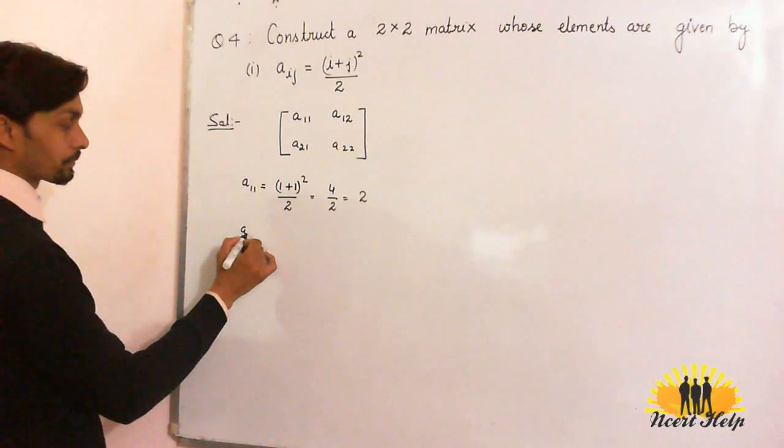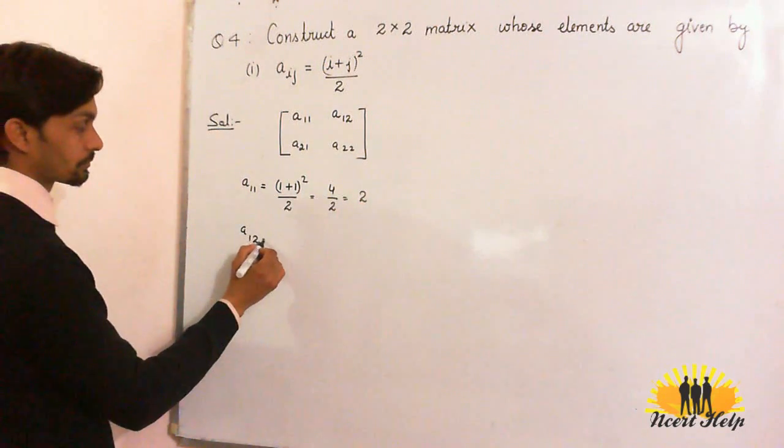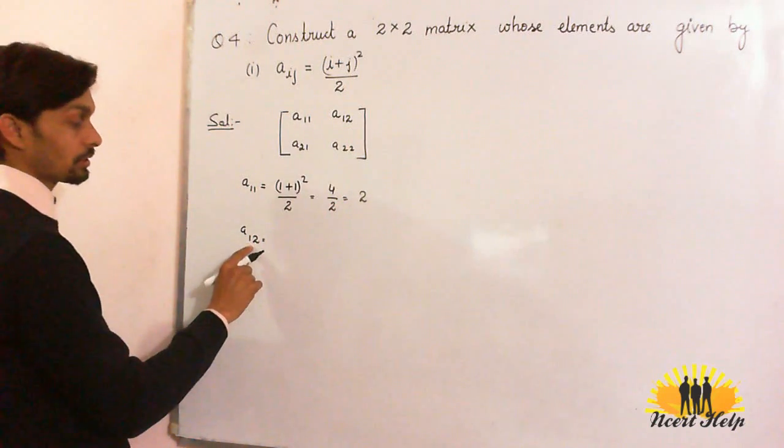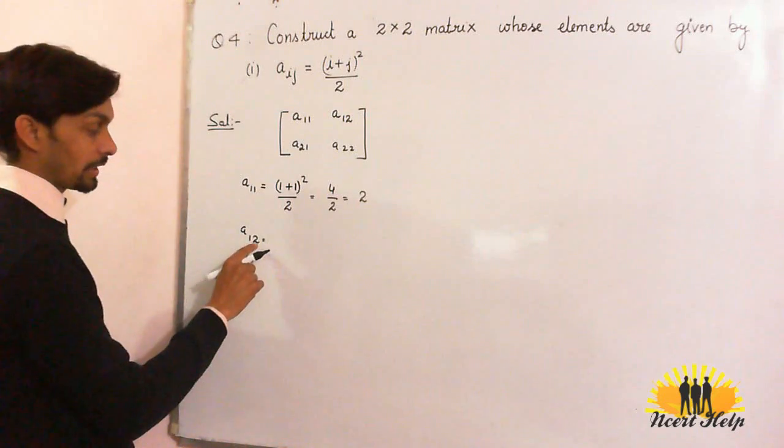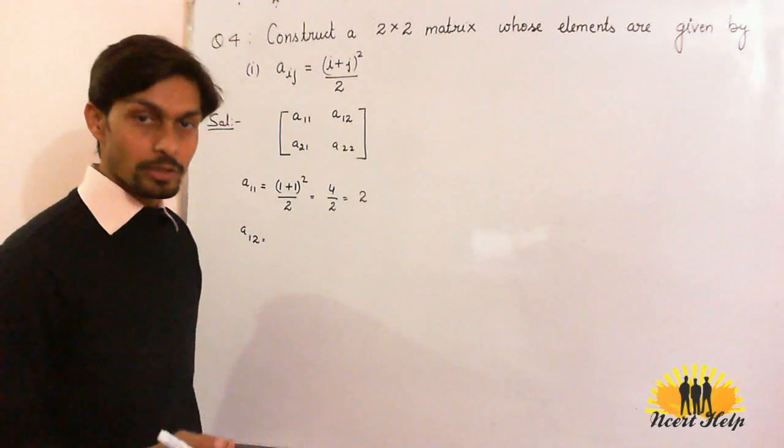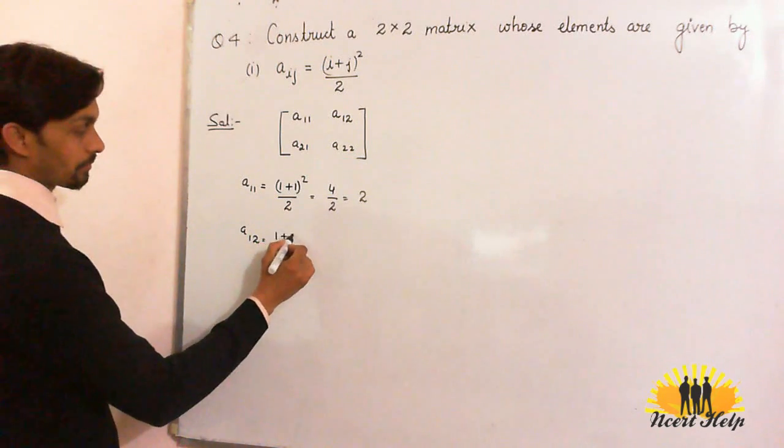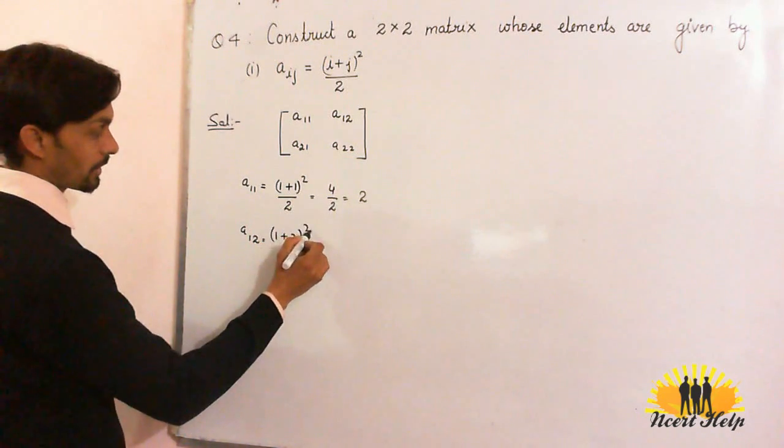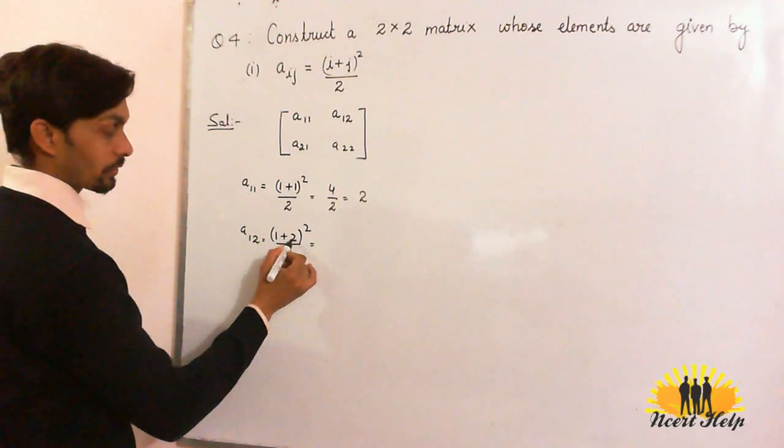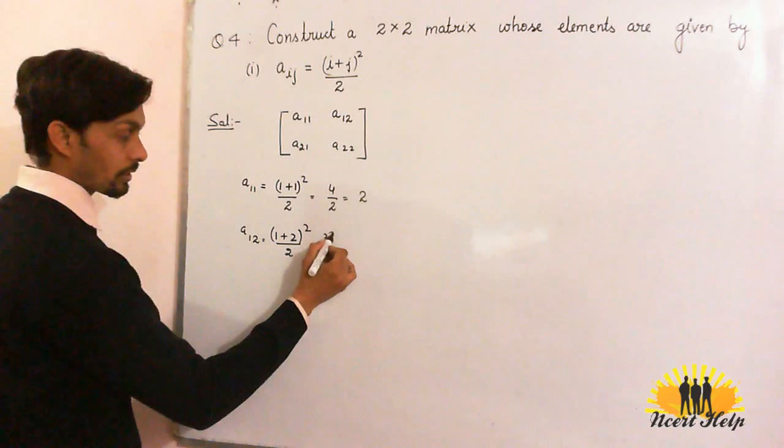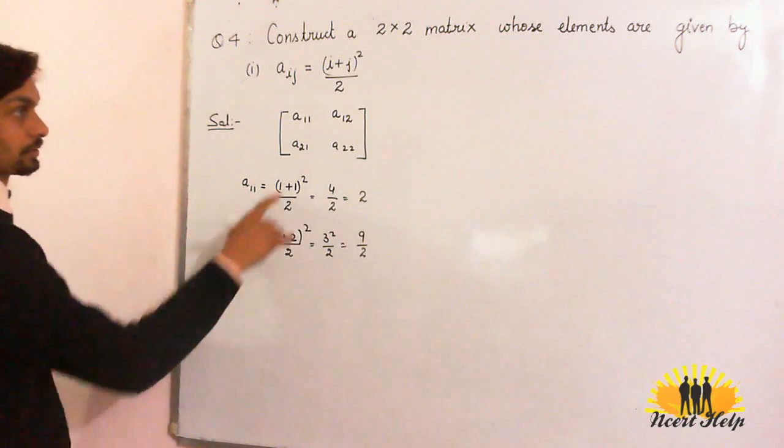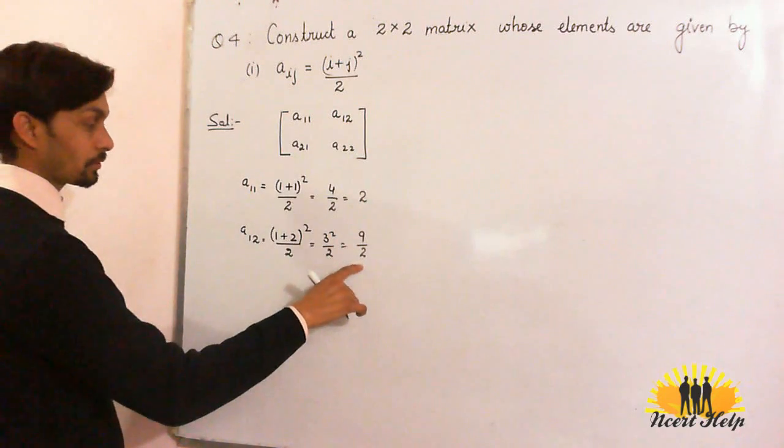Now A12, what will be this element of the matrix? A12, put i = 1 and j = 2 in the formula (i+j)² divided by 2. (1+2)² divided by 2, that is 1+2 = 3, this will be 3² by 2 or 9/2. This element of the matrix will be 9/2.